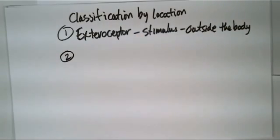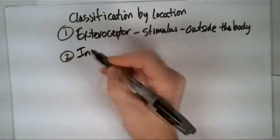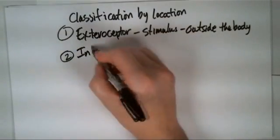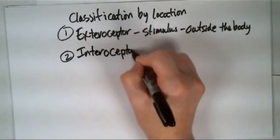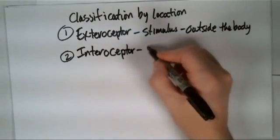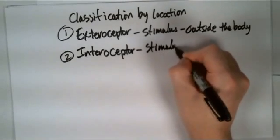So if you have something that's outside the body, you also would have receptors that pick up the stimulus inside the body, and that's how you can classify it. Interoceptor. And so the stimulus comes from inside the body.